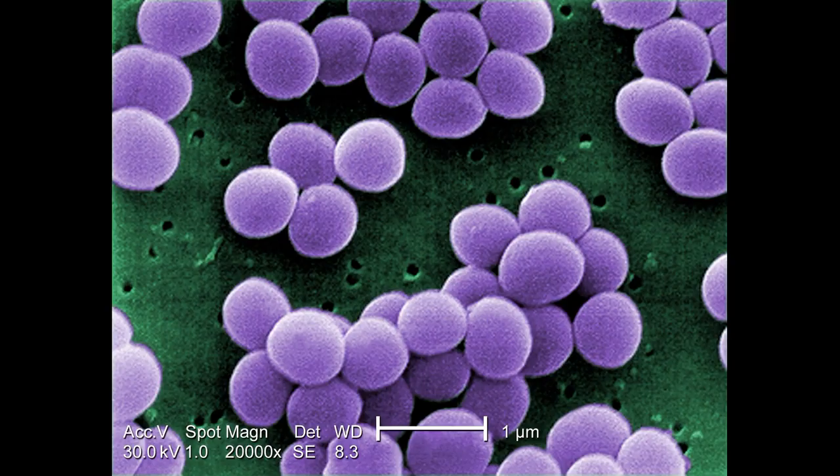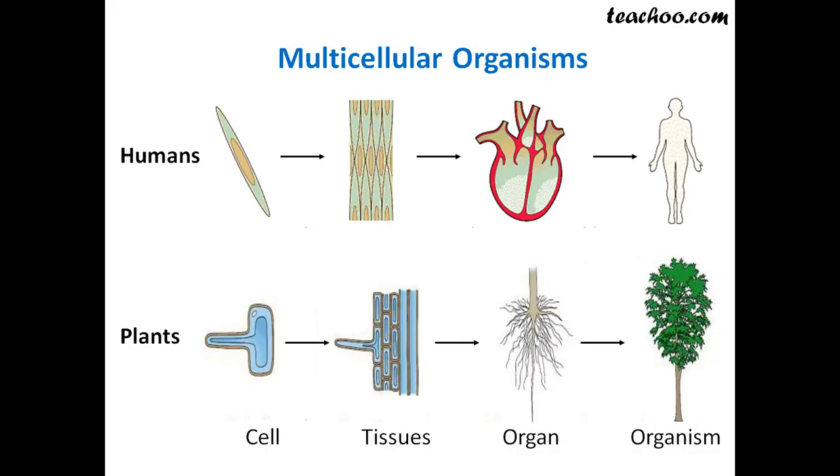Evolution as a whole doesn't trend from unicellular to multicellular organisms. After all, unicellular organisms still exist and they do quite well, vastly outnumbering multicellular organisms both in terms of species number and certainly in terms of individuals. What's interesting is that organisms exist pretty much all along the spectrum.